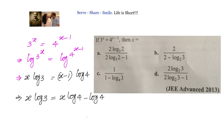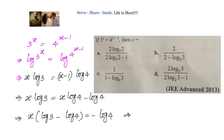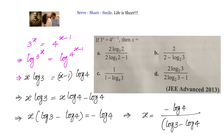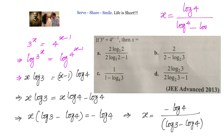Since we need to find the value of x, let us get all x terms to one side. We will have x into log 3 minus log 4 equals minus log 4. Multiplying through by minus 1, we get the final answer: x equals log 4 divided by log 4 minus log 3.